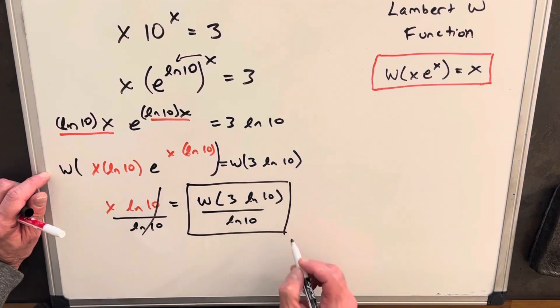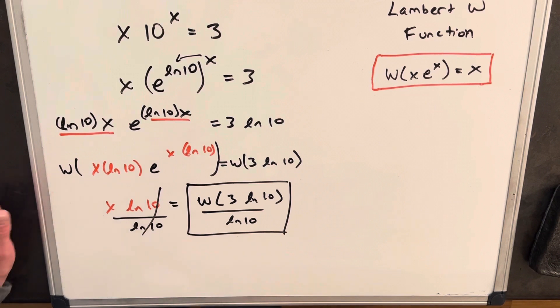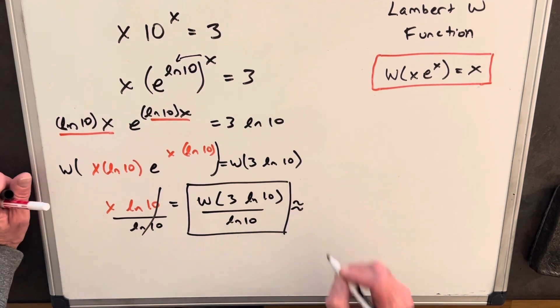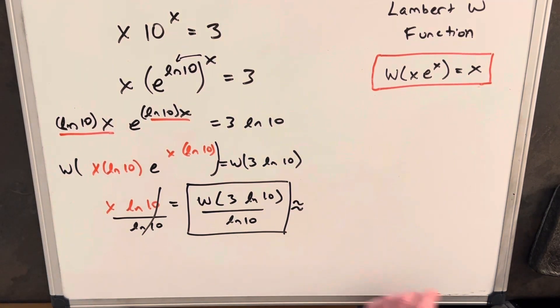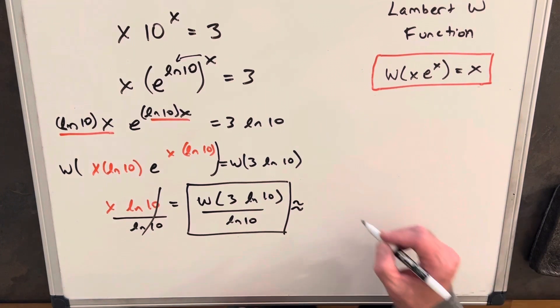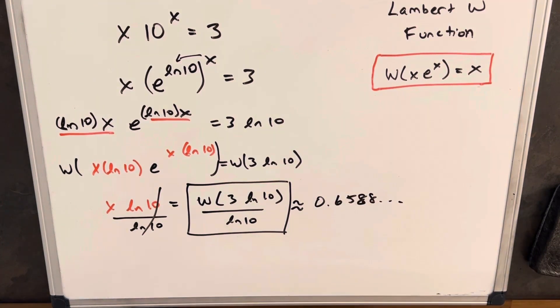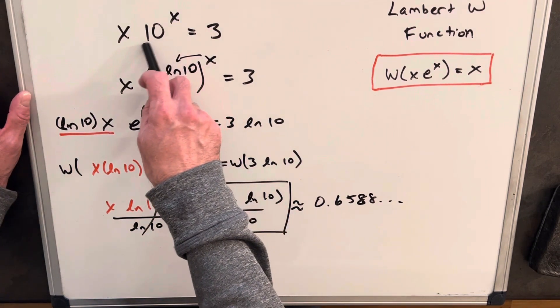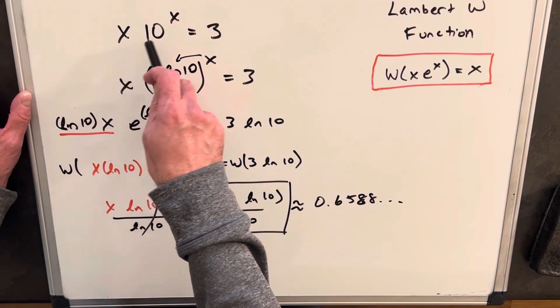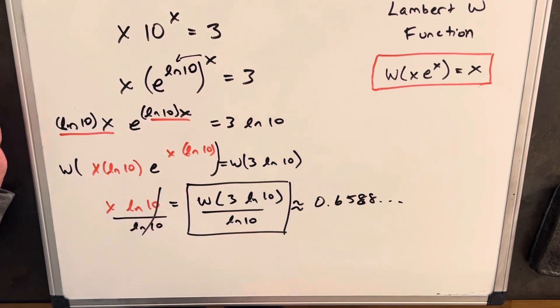So we just want to know, I'd kind of feel more comfortable if we get a decimal answer for this. So this is going to be about, when I put this in, well, from Wolfram Alpha, this came to 0.6588. And that answer makes sense because if you put in, if you had x is 1, then you just have 10. So it needs to be less than 1.